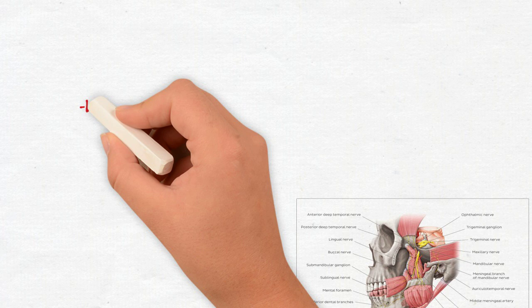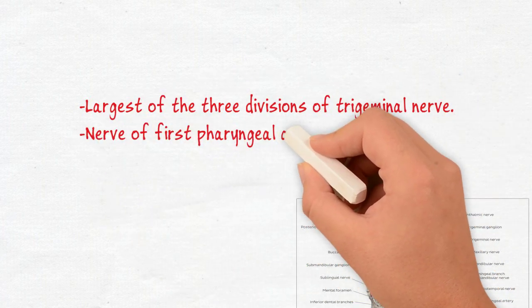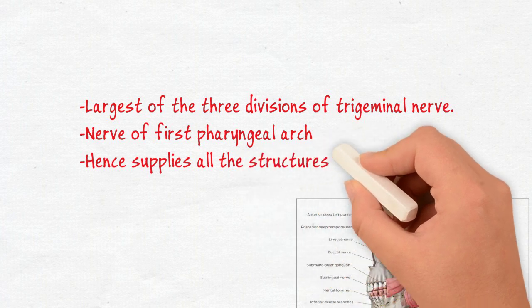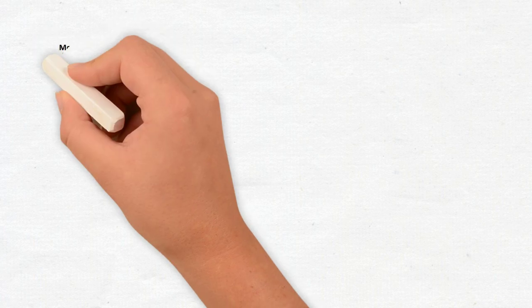The mandibular nerve is the largest of the three divisions of trigeminal nerve. The nerve is originated from the first pharyngeal arch and hence it supplies all the structures derived from this arch.